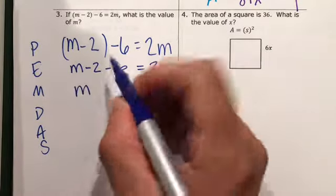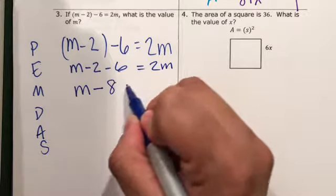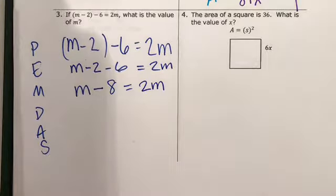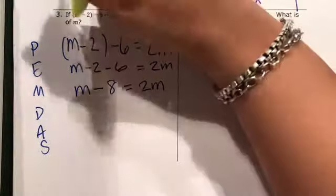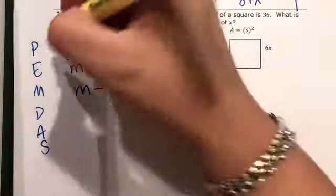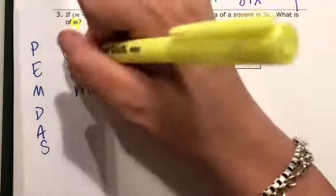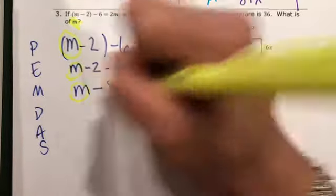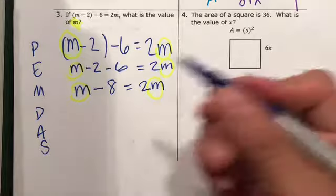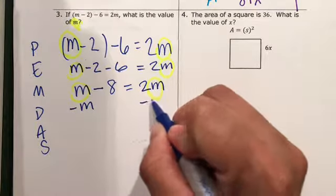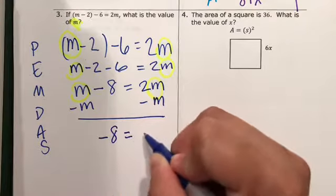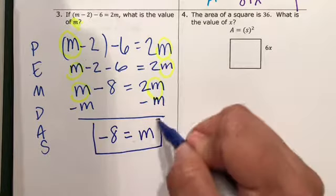We don't have any exponents. We don't have any multiplication or division, but we do have addition and subtraction. So m minus 8 equals 2m. I want to get m by itself. Remember, we're looking for m. Let's go together. Each line is a new equation. So minus m minus m, negative 8 equals m. And that is your solution.